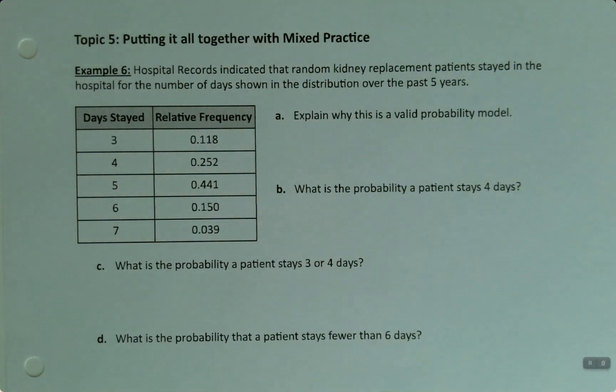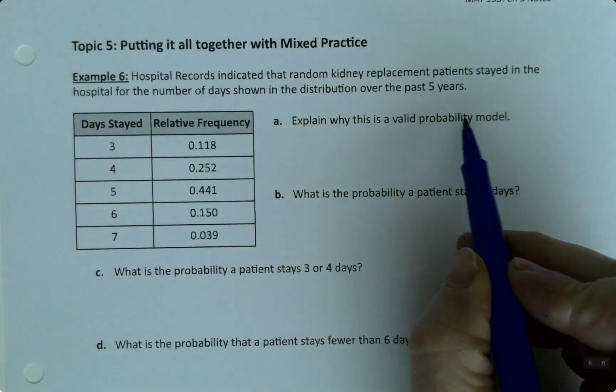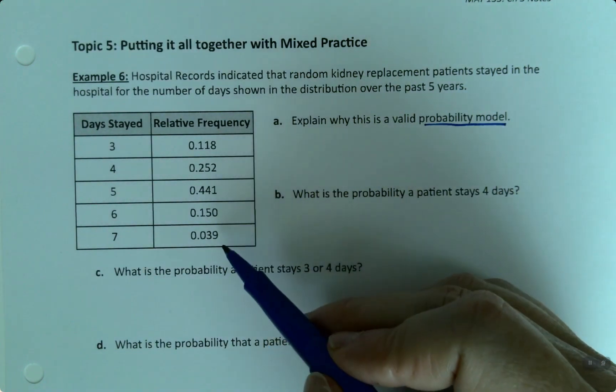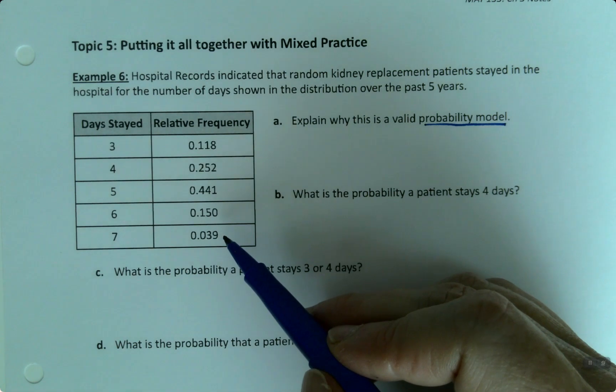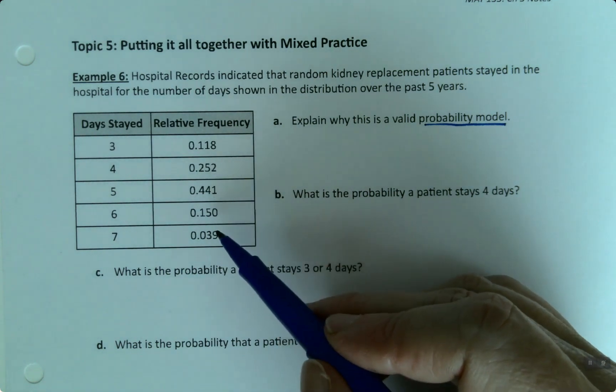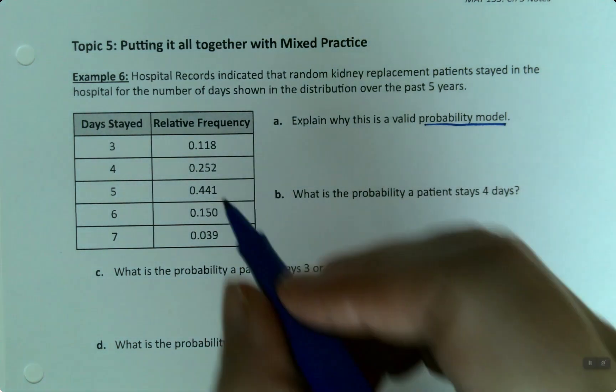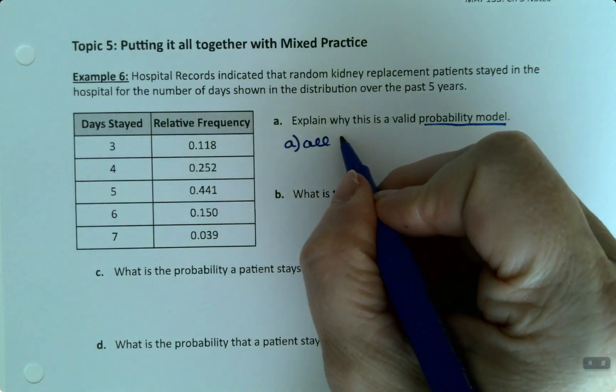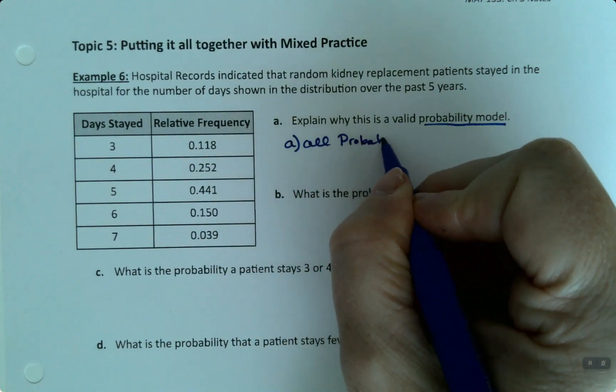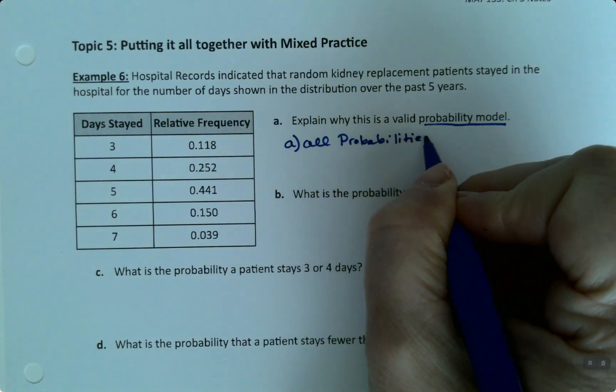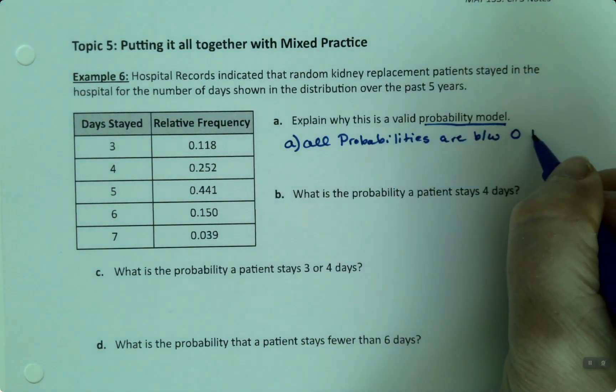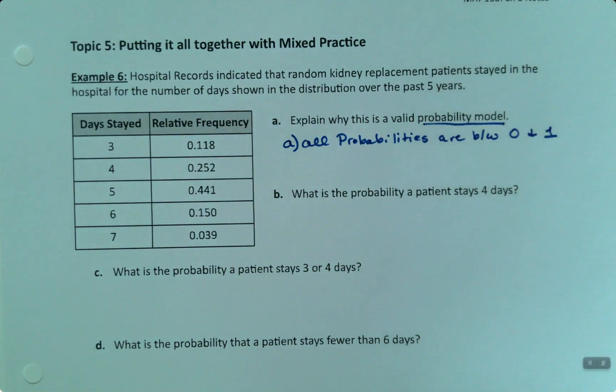Explain why this is a valid probability model. So for a probability model, you have to follow two rules, which is that these probabilities must add up to one, and that each of the probabilities themselves must be between zero and one. So first thing I can check, they're all between zero and one. So all probabilities are between zero and one. Easy enough.